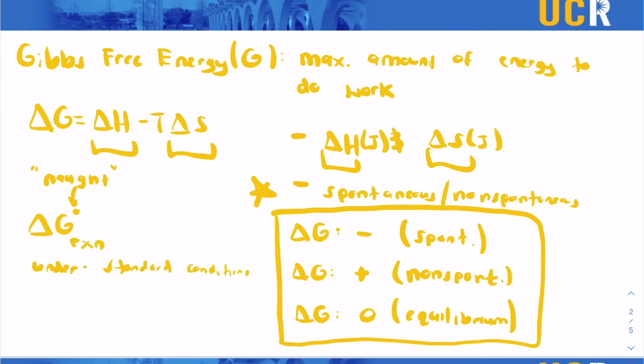So that means the delta G of this reaction is under standard conditions. That means 1 atm or 25 degrees Celsius, also 293 Kelvin. So that's what this naught means. If you ever hear delta G naught, that just means the reaction we're observing is under standard conditions, 1 atm, 25 degrees Celsius.